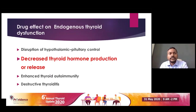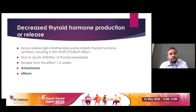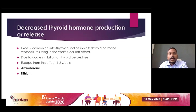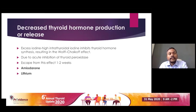The second mechanism of endogenous thyroid dysfunction is reduced thyroid hormone production or release. The classical drugs implicated are high-iodine-containing drugs such as iodine contrast agents, amiodarone, or other agents with high iodine levels, which cause increased intrathyroidal iodine. This inhibits thyroid hormone synthesis and release — known as the Wolff-Chaikoff effect — due to acute inhibition of thyroid peroxidase. Most of the time this iodine-induced inhibition lasts only one to two weeks, and escape occurs in most cases, except in patients with underlying thyroid disease like Hashimoto's disease or those who underwent partial thyroidectomy. Amiodarone and lithium are the other two drugs that can cause decreased thyroid hormone production and release.